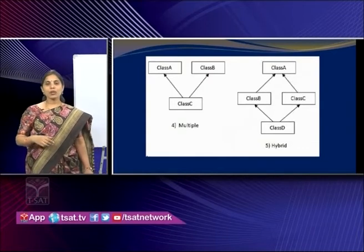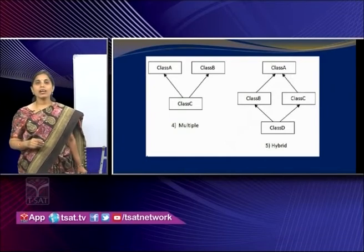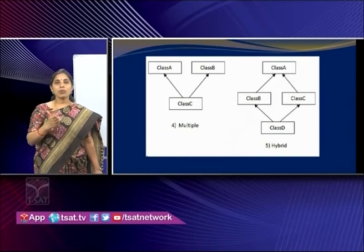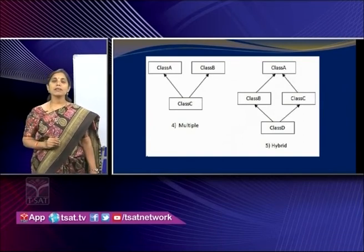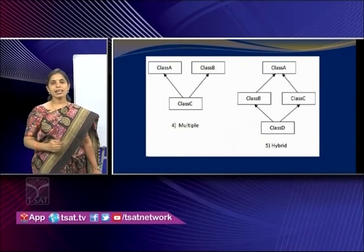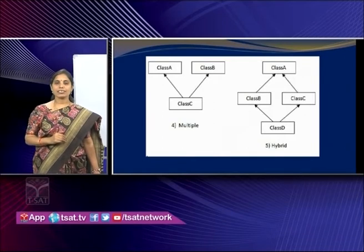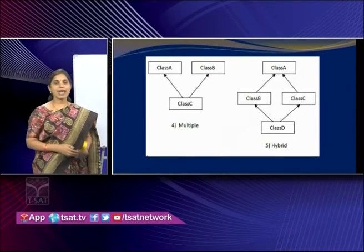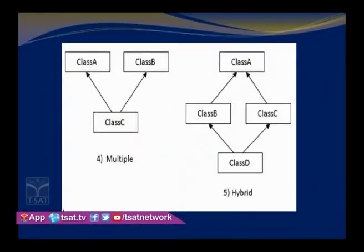Hybrid inheritance is when more than one type of inheritance is involved. For example, class B and class C are both subclasses of class A — that is hierarchical. Then class D is a subclass of both class B and class C — that is multiple. The combination of hierarchical and multiple is called hybrid inheritance. Since multiple inheritance itself is not supported in Java, hybrid inheritance is also not supported in Java.